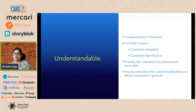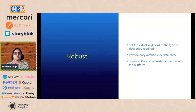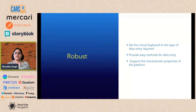The fourth principle: your apps should be robust. Set the virtual keyboard to the type of data entry required. Provide easy methods for data entry — text entry can be tedious even for people who are not disabled, so provide radio buttons and checkboxes if possible. Support the characteristic properties of the platform: if your platform allows users to zoom out, the content should reflow and users shouldn't have to scroll horizontally to get that information.